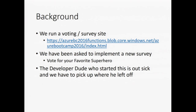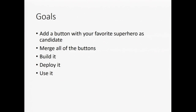So the goals: we're going to add a button with your favorite superhero as the candidate so people can vote for your superhero. We're going to merge all of the buttons — I saw at least five or six hands up, so that's at least six buttons we're going to merge together. We're going to deal with forking from GitHub, we're gonna build it, deploy it, and use it. We already have a build and deploy set up so we're skipping straight to use.